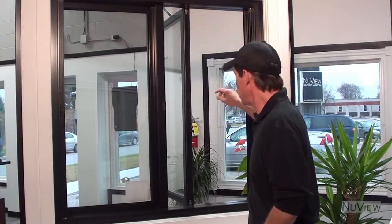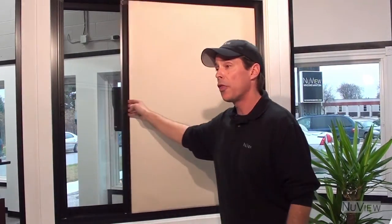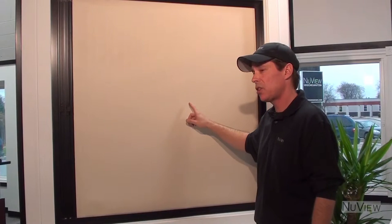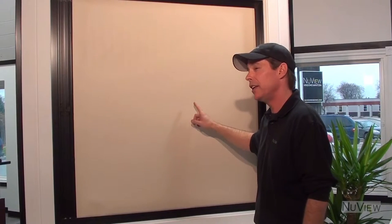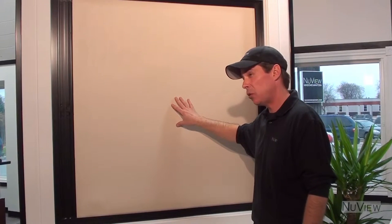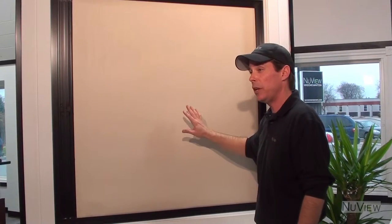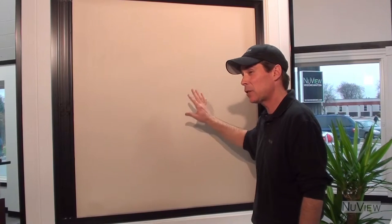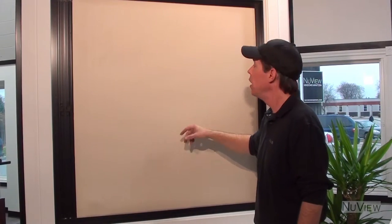Along with the solar screen, we also have incorporated into the NuView window the thermal blind. This is an amazing piece of technology. This is the only Energy Star certified window covering in North America. When this blind is closed, it doubles the efficiency of the window, so this tri-pane window is now as efficient as a six-pane window system.